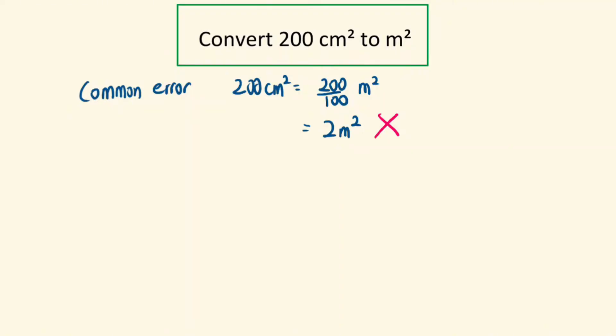What we should do instead is something like this. We can think of the cm² as 200 times 1cm times 1cm, because cm² represents the units for area.